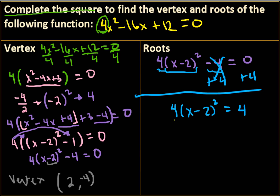I've got to get rid of this because it's outside, so I'm going to divide by 4. So then we get x minus 2 quantity squared equals 1.